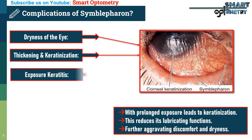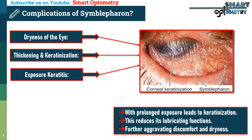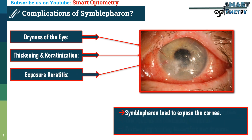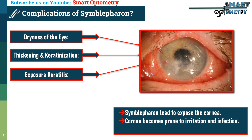3. Exposure keratitis: Symbolpheron leads to inability to close the eye completely, which exposes the cornea. The exposed cornea becomes prone to irritation and infection, leading to painful corneal ulcer or exposure keratitis.